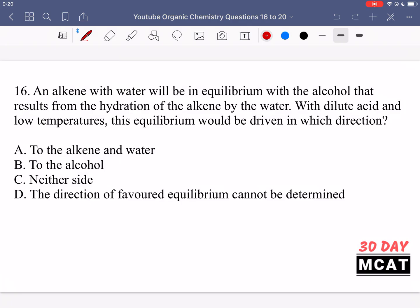Question 16 is saying an alkene with water will be in equilibrium with the alcohol that results from the hydration of the alkene by the water. With dilute acid and low temperatures this equilibrium would be driven in which direction?